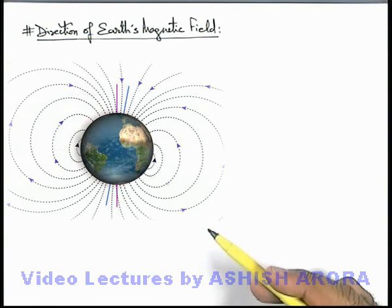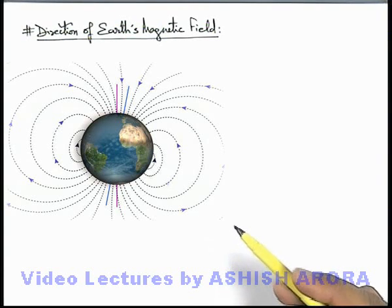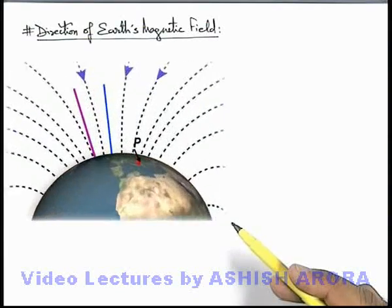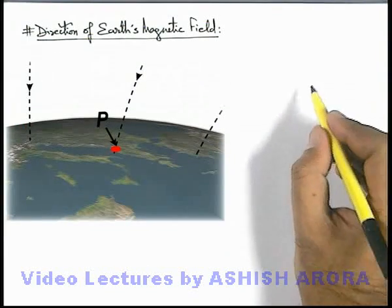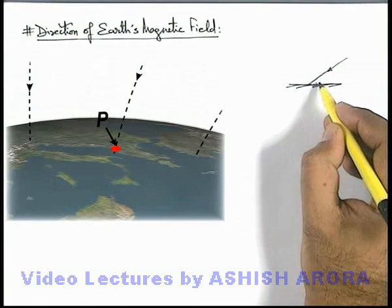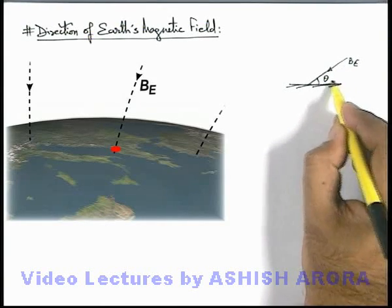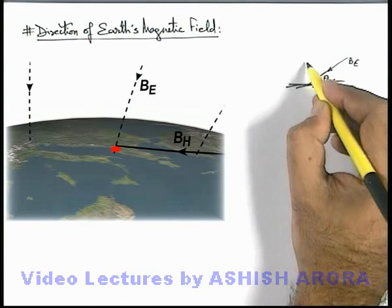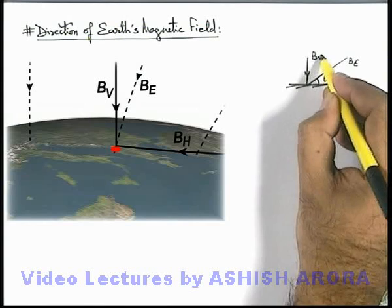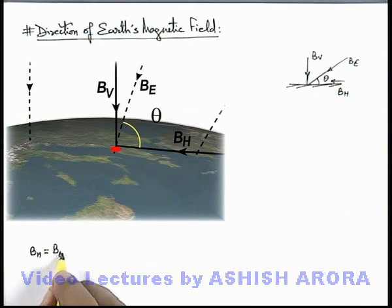If we specifically analyze the direction at a point on Earth's surface, in the northern hemisphere let's consider a point P. Zooming into the picture, we can see that at point P the direction of Earth's magnetic field is going into the Earth's surface at an angle theta with the horizontal. If this is Earth's magnetic field B-E, it will have one component B-H which is horizontal, given as B-H = B-E cos(theta).